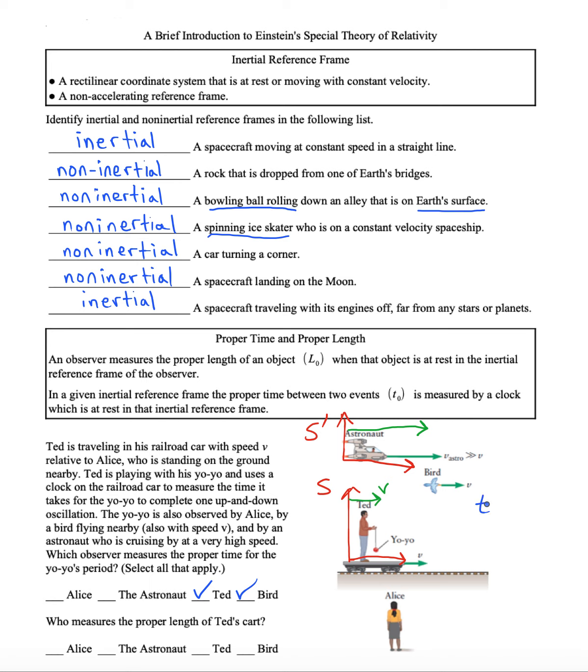They'll measure it to be a period T sub O. We could also take a look at Alice's reference frame. Her reference frame is not moving at all relative to Earth. So I won't put a green arrow on it. Okay, now, who can measure the proper length of Ted's cart? Go ahead and try it for yourself. So since Ted is in the reference frame of the cart, Ted can measure the proper length of the cart. He would call it L sub O. And not only can he measure it correctly, but the bird can too. It's because they are traveling at the same velocity as the cart.